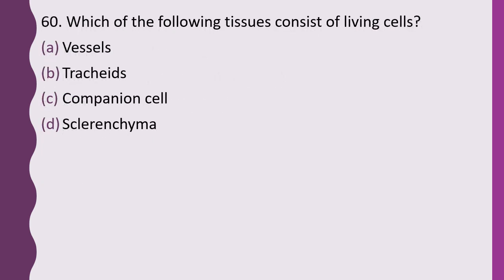Question 60. Which of the following tissues consists of living cells? Vessels, tracheids, companion cells, or sclerenchyma. The correct answer is option C, companion cells.